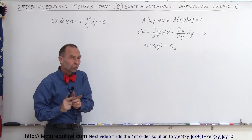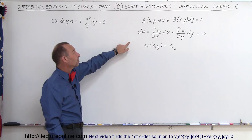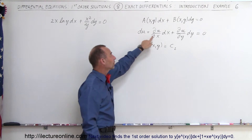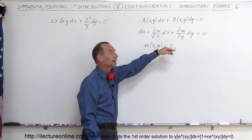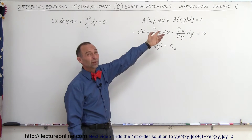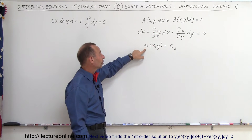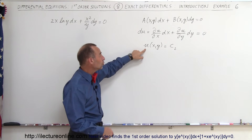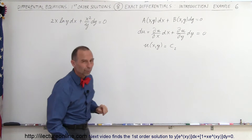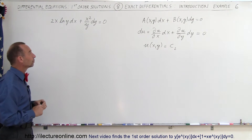The general solution to that will be some function u of x and y, so that the differential can be written in a general format. We know that the differential must be equal to zero based on the original equation, which means that the solution u must be equal to a constant. We're going to use all that information to solve the equation.